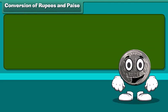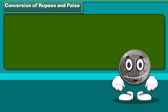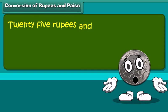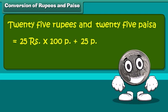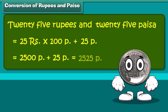We start with conversion of rupee to paisa and vice versa. 25 rupees 20 paisa is equal to 25 multiplied by 100 plus 20 paisa. This becomes 2500 plus 25 paisa, which we can say as 2525 paisa.